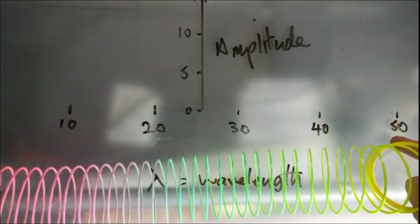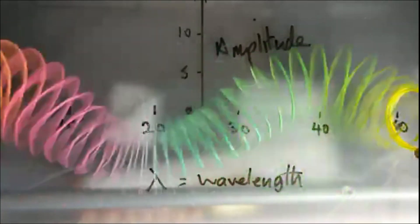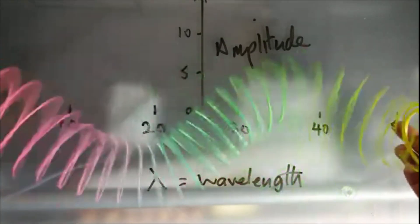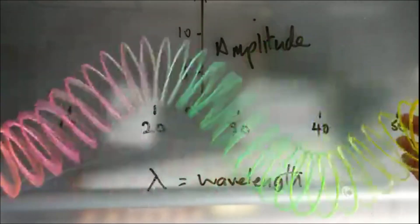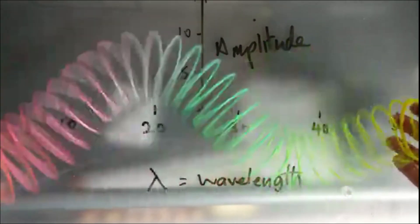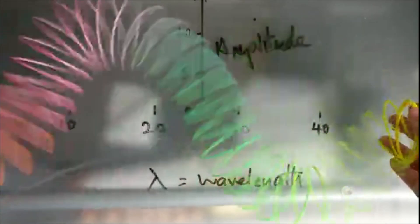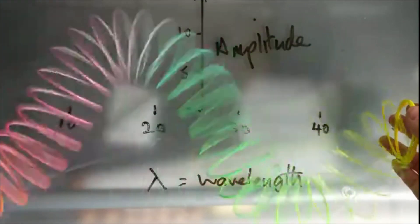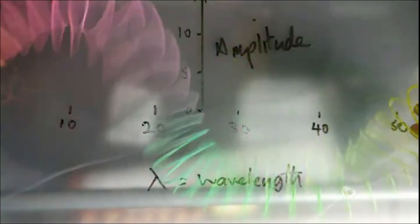Now if I put a bit more energy in, I've got a similar idea. I just want an up and a down. That's more like half a meter wavelength but 10 centimeters amplitude. You can see I'm putting in more energy. And if I go even more, there's 15 centimeters amplitude and I'm still getting almost 50 centimeters for a wavelength. That's 50 centimeters and it's a 15 centimeter amplitude.